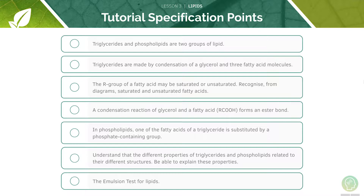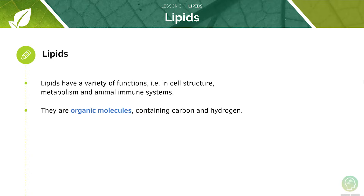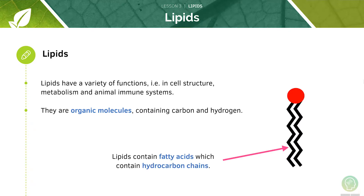Feel free to pause the video now and have a quick read through the objectives before we begin. First, we will look at the groups of lipids. Lipids are involved in various biological processes, ranging from providing structure to a cell, to metabolism, to even playing a role in animal immune systems. They are organic molecules and contain large amounts of carbon and hydrogen within their chemical structures. Lipids contain fatty acids, which contain hydrocarbon chains — extremely long networks of carbons and hydrogens, which are covalently bonded to one another.